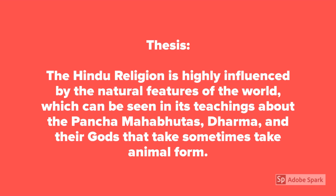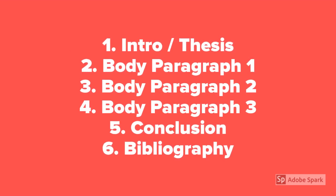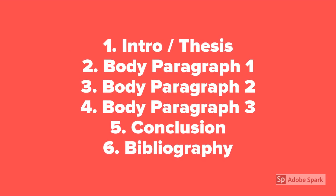You can see three clear subjects within that thesis — pancha mahabhutas, dharma, and the gods — and those three subjects can serve as your body paragraphs later in your research paper. Number six: create an outline. The first paragraph you will write is the introduction, which contains your thesis. As mentioned, your thesis has three main ideas, and those three main ideas will serve as the topic sentences and main focus of each body paragraph. Then you'll write a conclusion and end with a bibliography, which is where you list all of the sources you used to write this research paper.